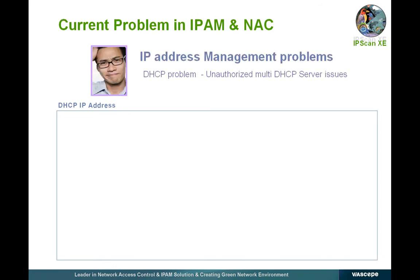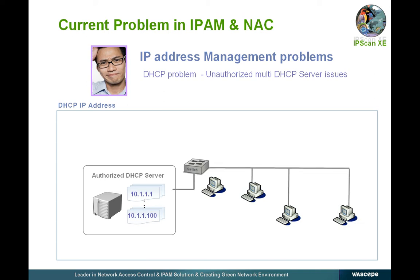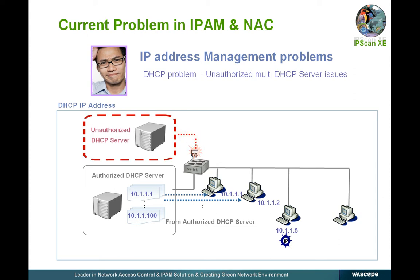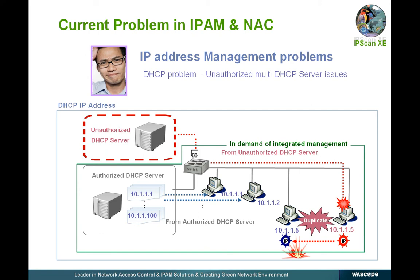In most DHCP environments, problems with IP allocation are caused by unauthorized or uncontrolled routers and DHCP servers installed and used by end users. If one authorized DHCP server assigns 10.1.1.5 to PC1 and another unauthorized DHCP server assigns the same IP to PC2, an IP conflict will occur inevitably, but the administrator can't find the cause because he does not manage the unauthorized DHCP server. In the worst case, the whole IP range can't be assigned at all. In the DHCP server environment, integrated management of static IP addresses by a single DHCP server is much in demand.